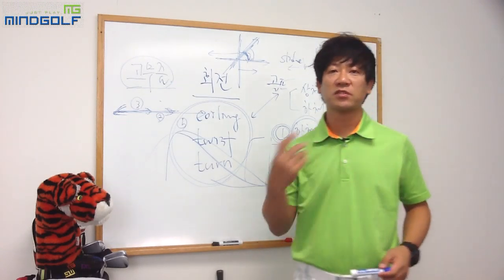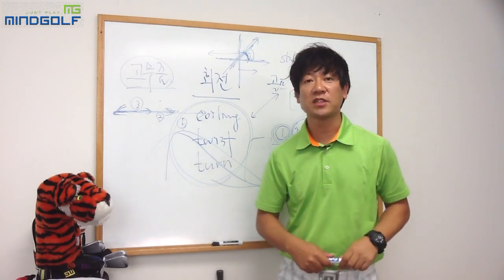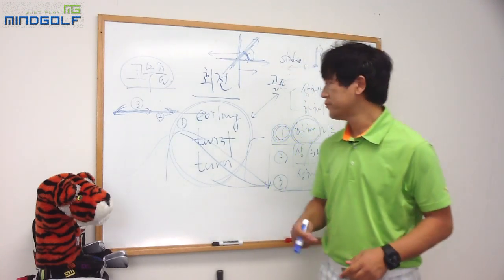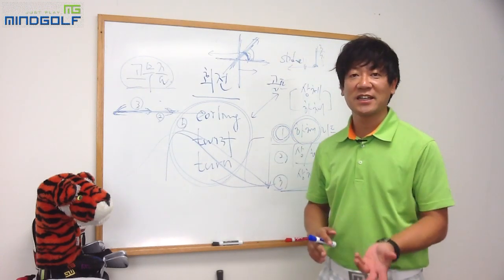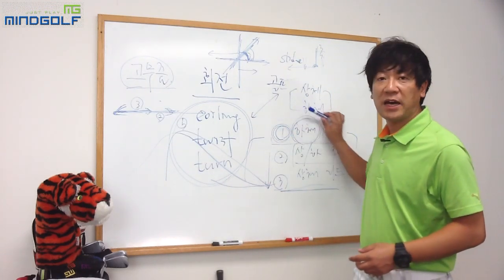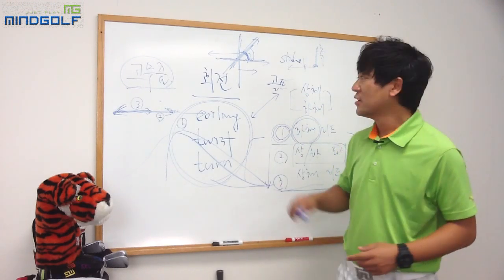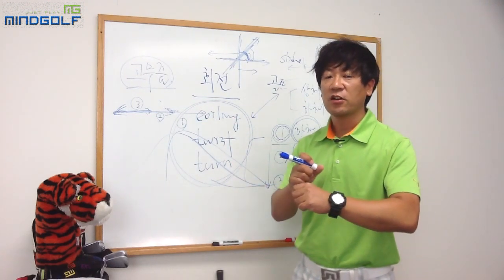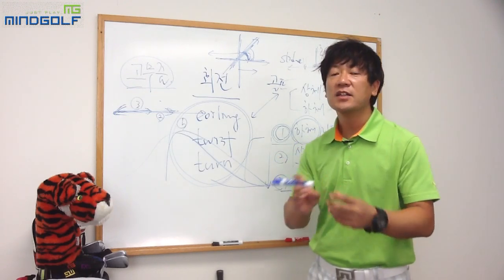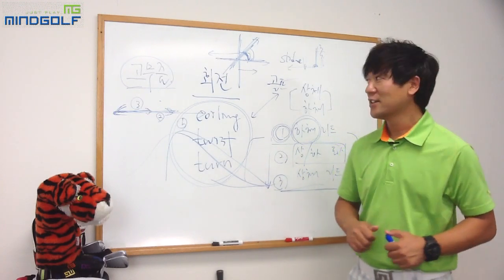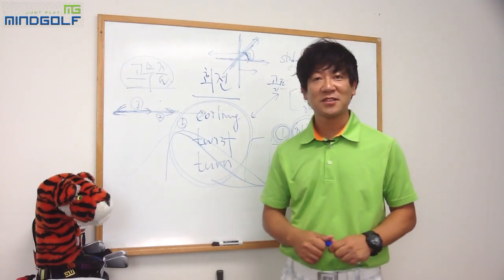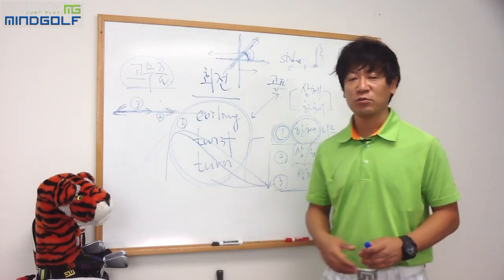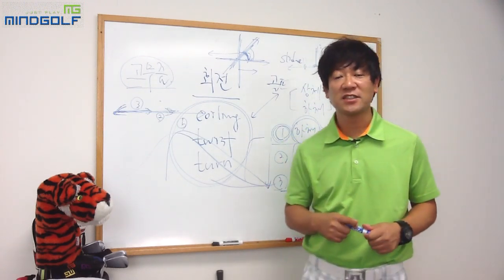오늘은 비거리를 어떻게 늘리자는 측면보다는, 왜 많은 사람들이 하체 리드 스윙을 하라고 하는지 그 원리를 이야기했습니다. 회전 운동에서 얼마만큼의 꼬임을 잘 유지하고, 어떤 형태로 움직여야 꼬임을 더 많이 만들어서 탄성력을 최대로 해서 비거리에 도움이 될 수 있는지에 대한 이야기입니다. 마인드 골프의 여덟 번째 샷 주제는 몸의 회전 운동과 하체 리드 운동이 왜 스윙과 비거리에 도움이 되는지였습니다.